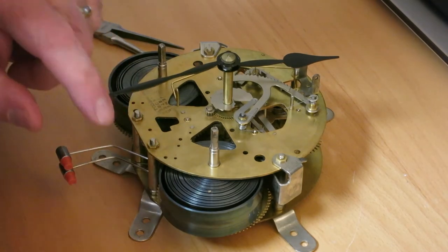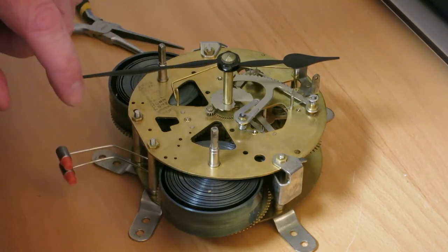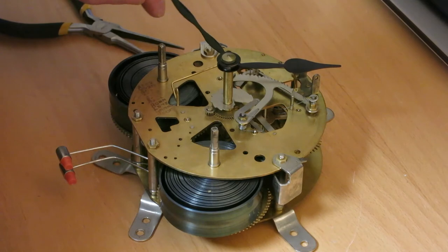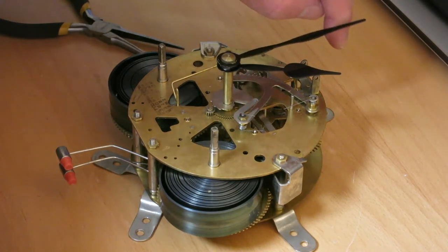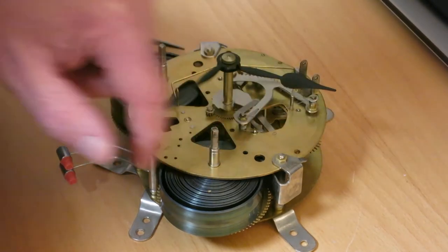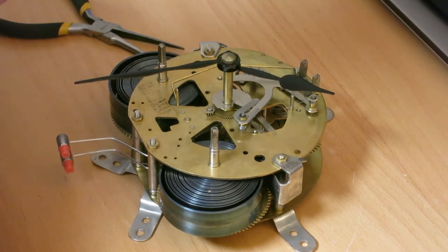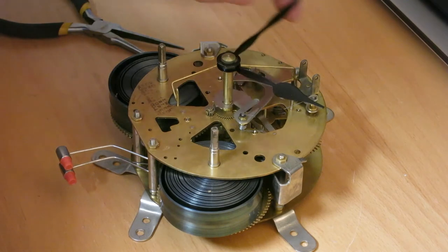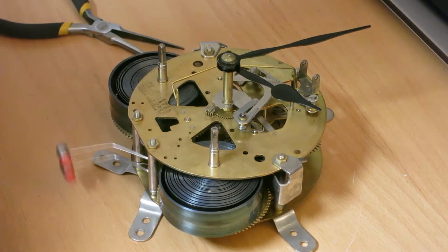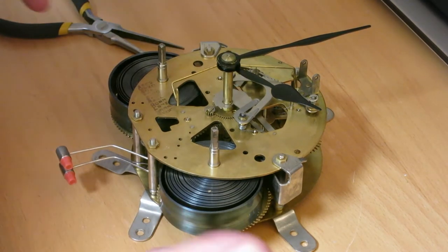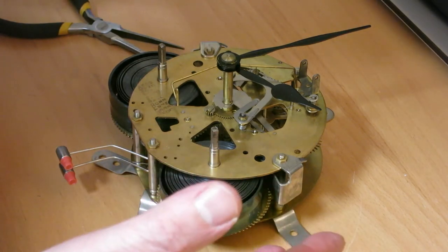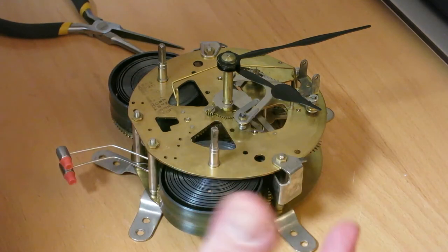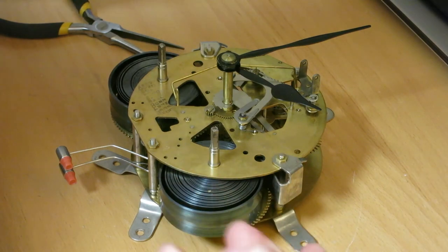And then 1 o'clock is the next one. You need to make sure that the rack doesn't sort of catch halfway between 12 and 1. And if it isn't, perfect. So we have the hour hand and the corresponding snail in the right place. So now I can reassemble the clock into the case and set it running.